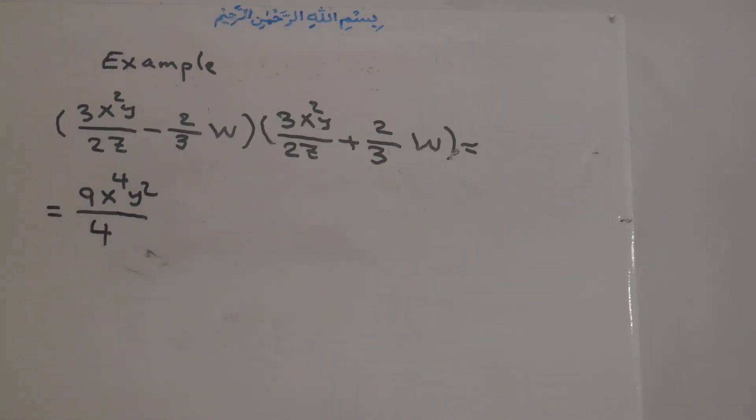2 times 2 is 4. Z to the power of 2. Minus 2 over 3 to the power of 2 is 4 over 9. 3 times 3 is 9. w times w is w to the power of 2. Very easy.